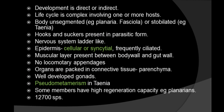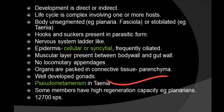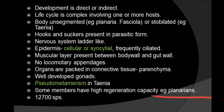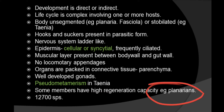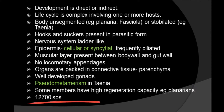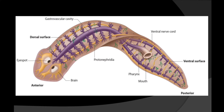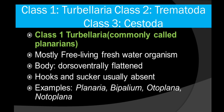They have well-developed gonads. In Taenia, there is pseudo-metamerism — it is not true metamerism. Some members have a high regeneration capacity; for example, in Planarians, the body can regenerate significantly. Till now, around 12,700 species are known in the phylum Platyhelminthes.